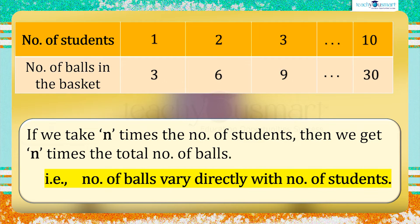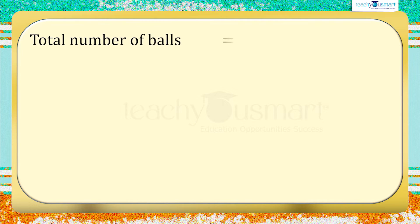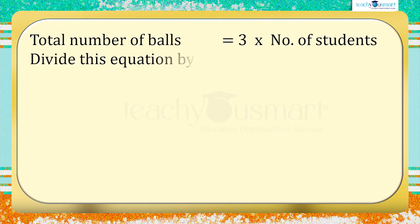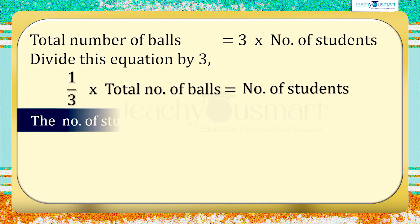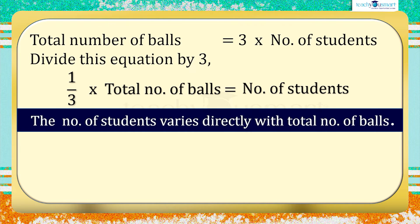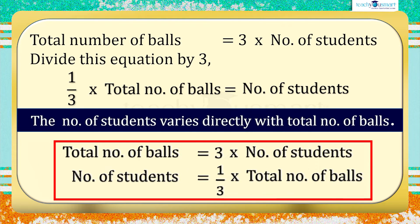That is, the number of balls varies directly with the number of students. We have: total number of balls = 3 × number of students. If we divide this equation by 3, we get: (1/3) × total number of balls = number of students, or number of students = (1/3) × total number of balls. Here we can say the number of students varies directly with the total number of balls. These two equations are the same.